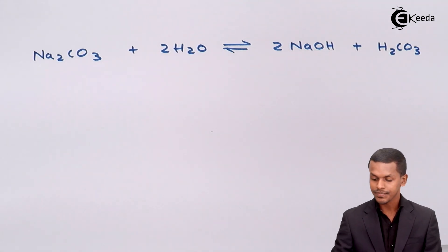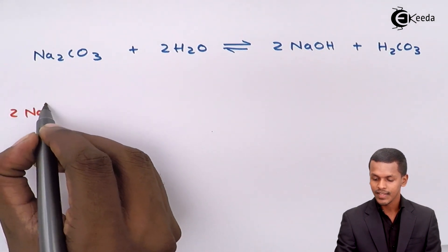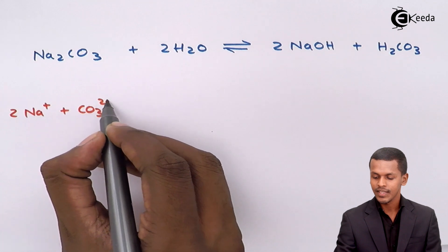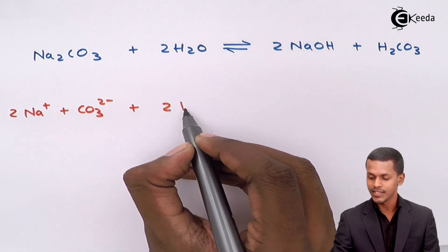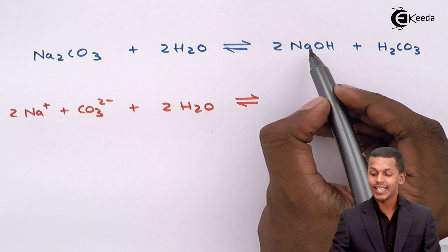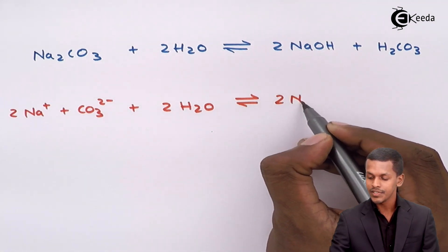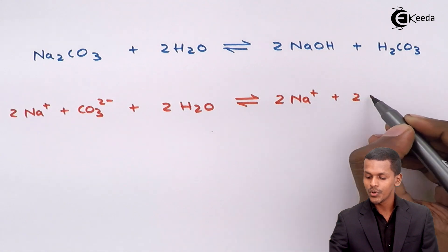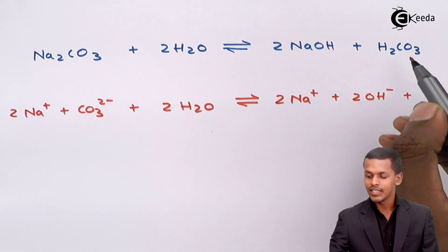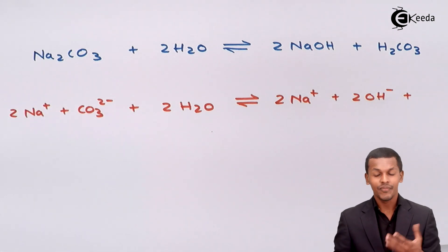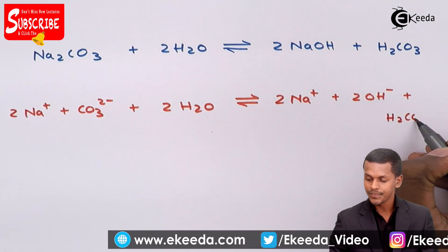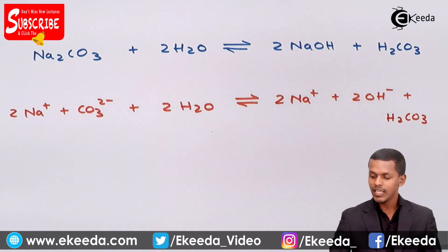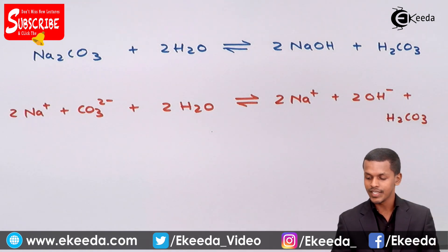In this form, we get 2 moles of Na⁺ along with CO₃²⁻, and 2 moles of H₂O. The NaOH dissociates into 2 moles of Na⁺ along with 2 moles of OH⁻. Since H₂CO₃ is a weak acid, it can partially dissociate into 2 moles of H⁺ along with CO₃²⁻, but the dissociation will not proceed to a great extent.